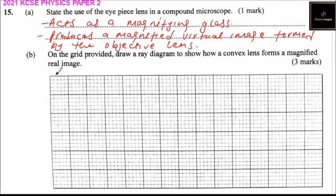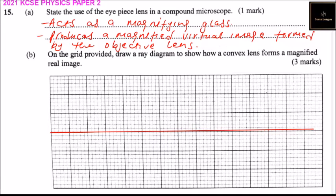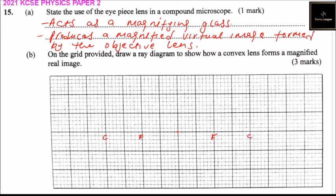Part B: on the grid provided, draw a diagram to show how a convex lens forms a magnified real image. We draw two axes here, place our points — this is the focal point and this is the center of curvature — the same on the other side: focal point and center of curvature. We use this symbol to represent a convex lens.